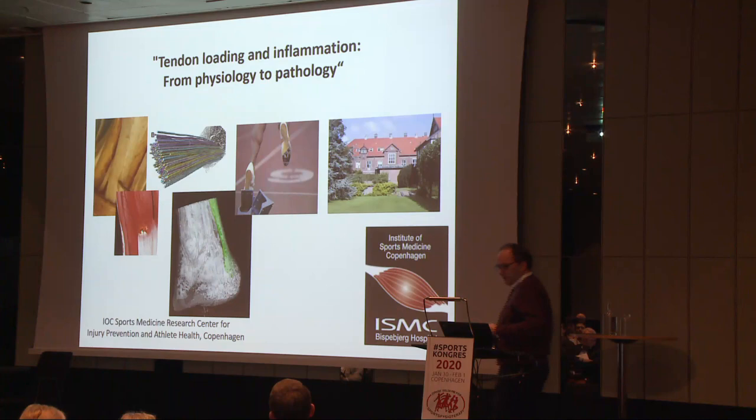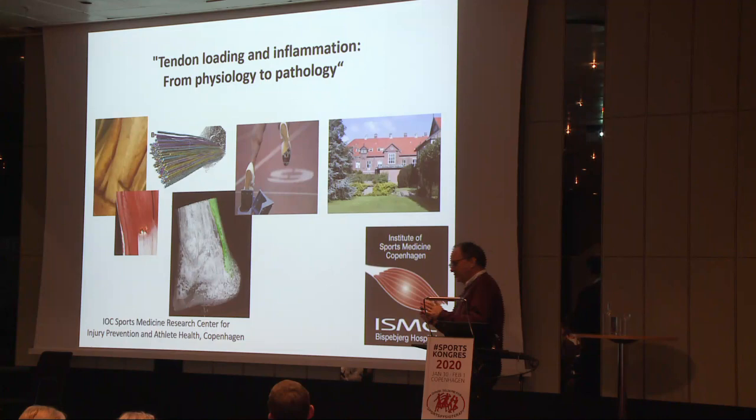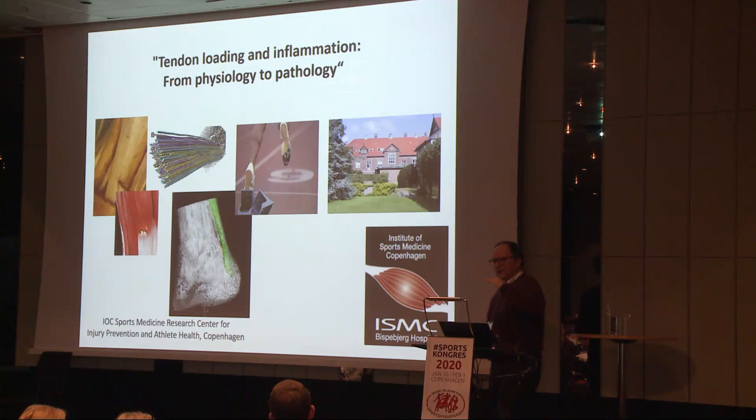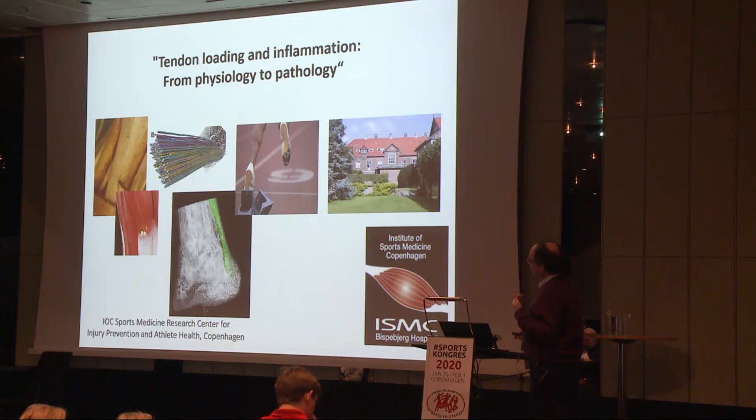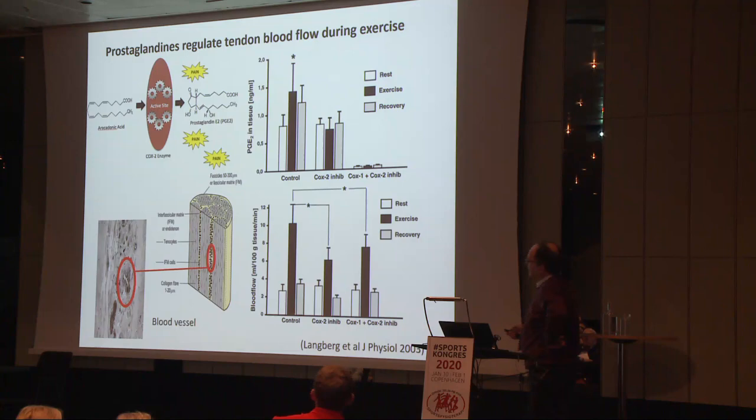If we look at the tendon and inflammation from the beginning, what I want to start by saying is that inflammation is like when you discuss what is early tendinopathy or late tendinopathy — you can always discuss what is inflammation. Is it a starting inflammation, a little bit of activation of the pathway, is it a lot of activation, or is it extreme? Everybody would agree when it's extreme, but even in a physiological situation, it seems like activation of inflammatory pathways is needed.